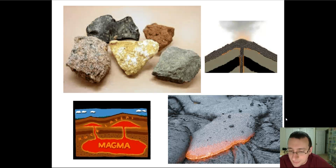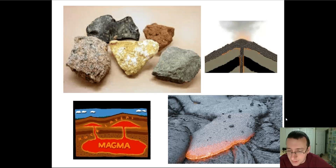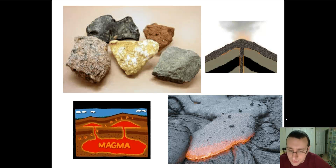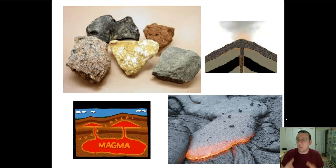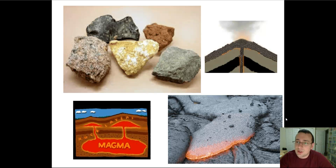The biggest thing you need to know is that there's a difference between a rock being intrusive or extrusive. Intrusive rocks will typically cool down slower because they're close to the magma chamber where the heat is. Extrusive rocks, on the other hand, are exposed to air or water and will cool down a lot faster.